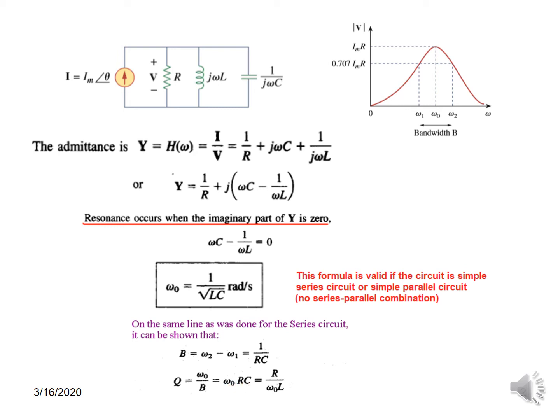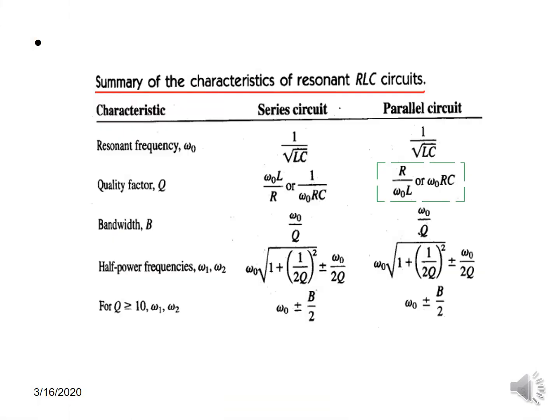It can also be written as R/ω₀L, so we saw this earlier also. And just to give you an idea, the comparison between the series parameters and the parallel parameters: the frequency formula is same, bandwidth formula same, half-power frequencies same, half-power frequencies for Q greater than 10 same formula. The only difference is here the Q factor formula: in case of a series it is ω₀L/R, here it is inverse of that so R/ω₀L. And same you get inverse of this here. So this is the only difference.